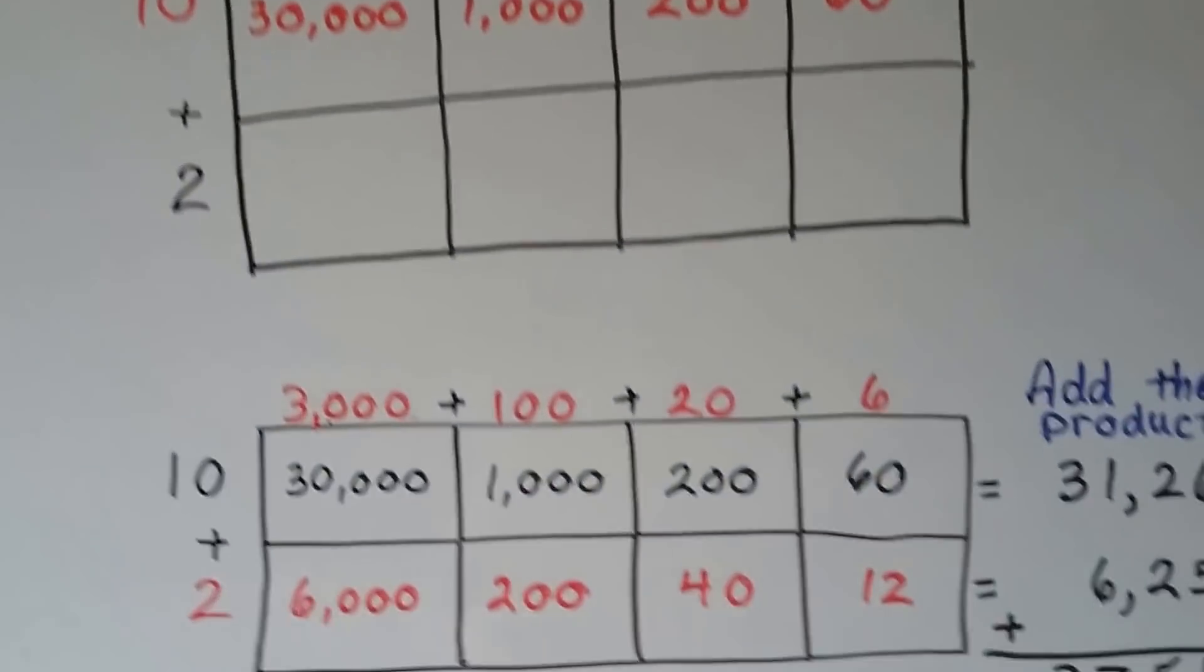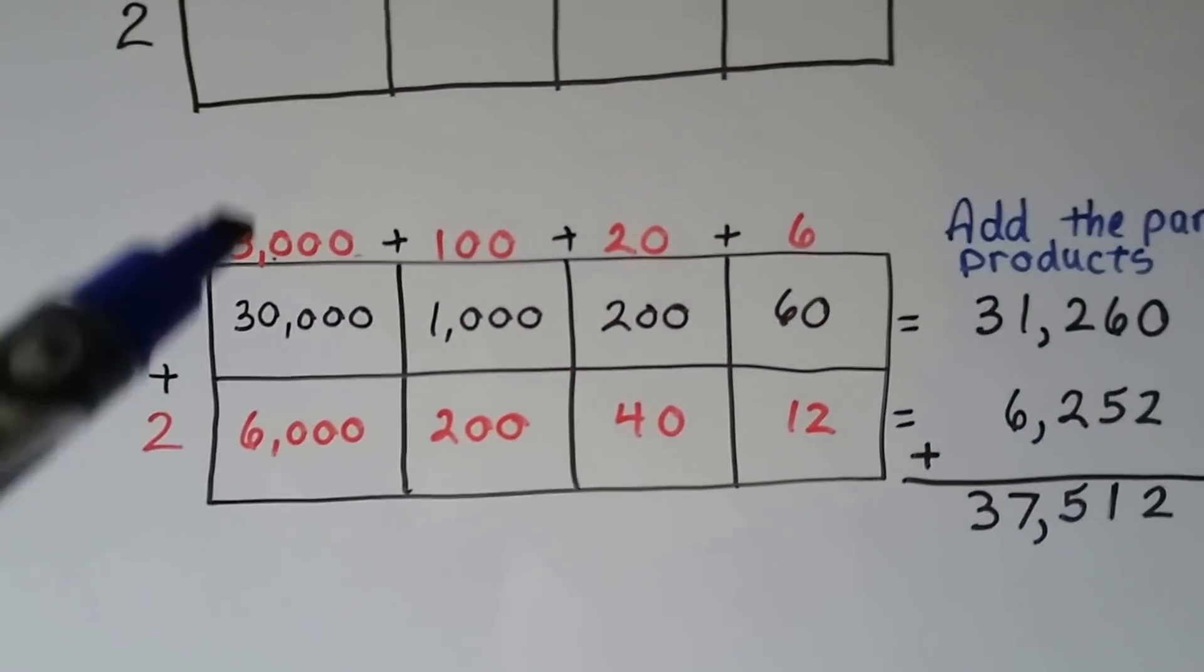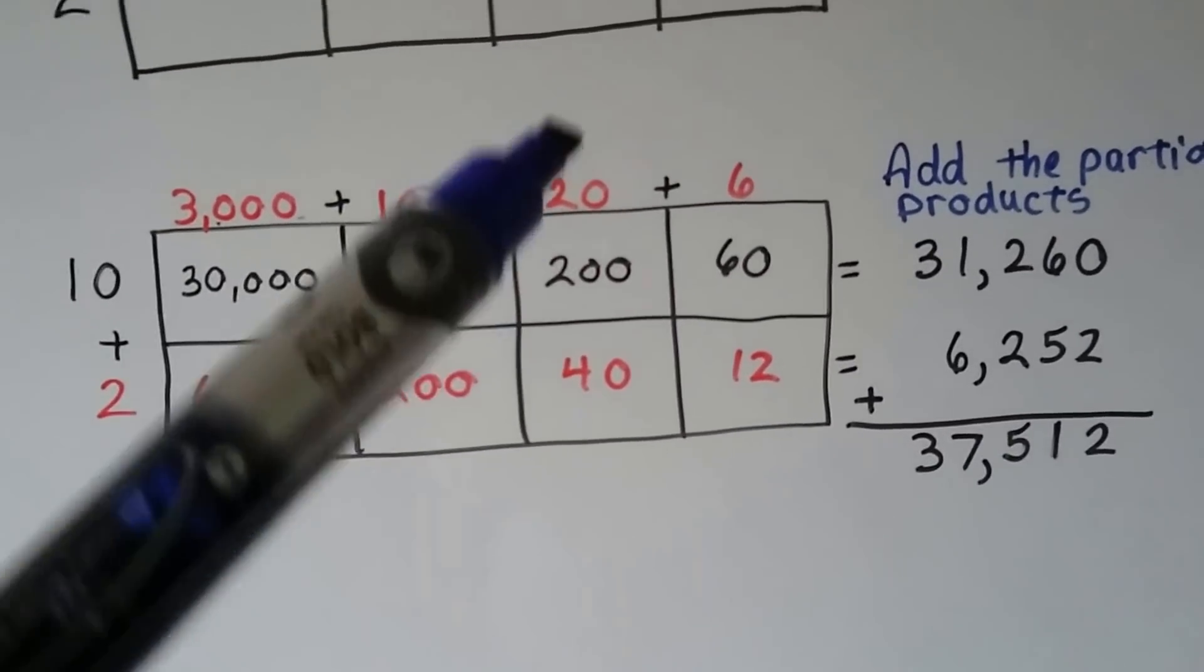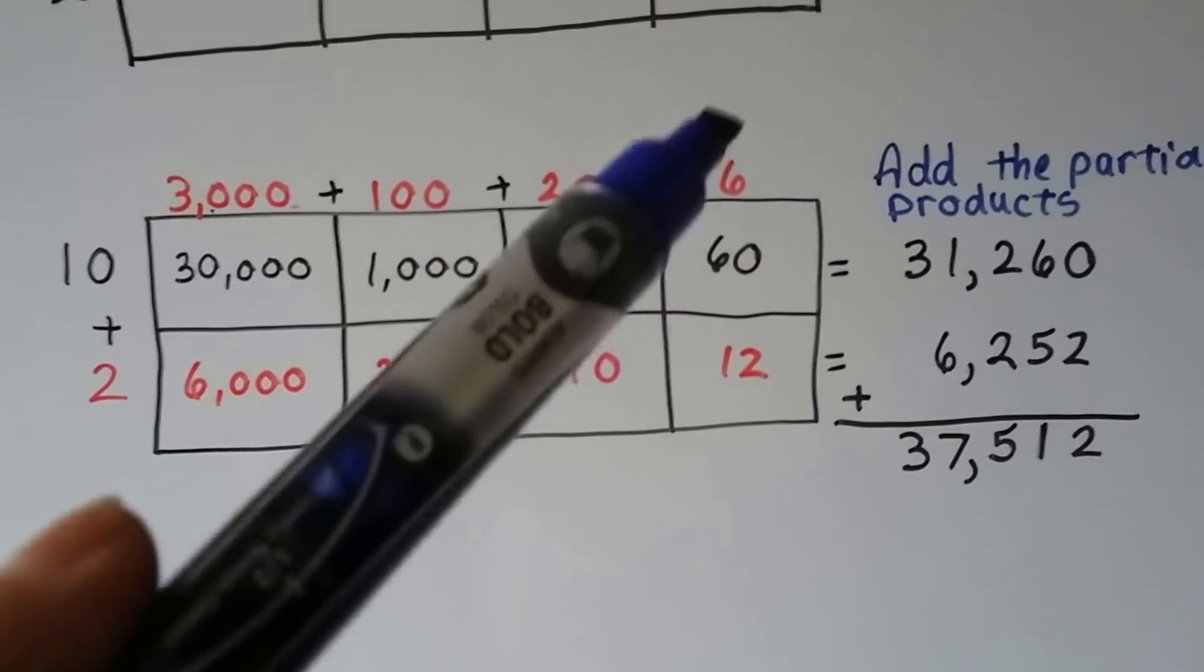Now it's the 2's turn. We do 2 times 3,000, which is 6,000. 2 times 100, which is 200. 2 times 20, which is 40. And 2 times 6, which is 12.